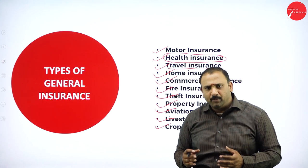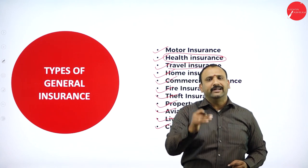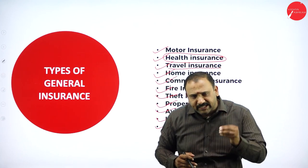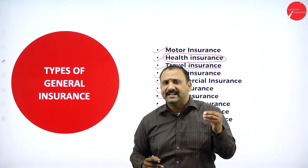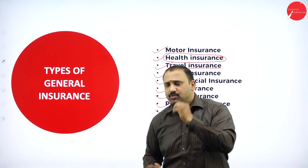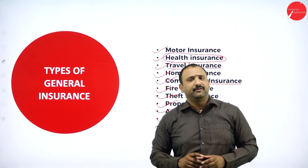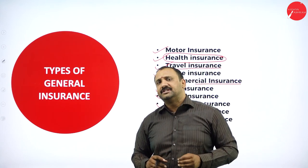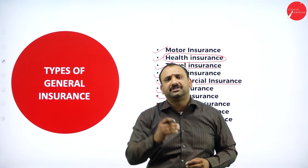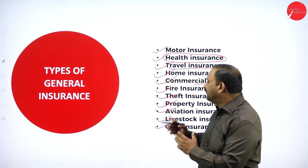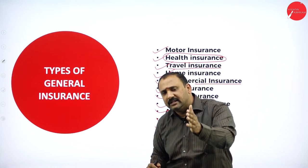Home insurance is important because our home is the most important place on earth — where we live. Being a non-living thing, we need general insurance for it against untoward incidents, fire breakouts, or natural calamities. Commercial insurance is purely from a business standpoint — used in business and trade activities. Based on the nature and type of trade, insurance is particularly designed for it, making it a tailor-made product that differs from business to business.